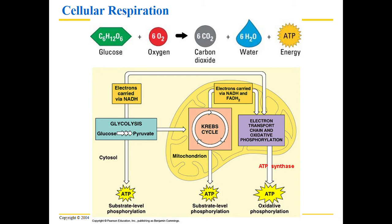The Krebs cycle is also called the citric acid cycle — same thing, just two different names. This is step two of the process. Here we take those three-carbon pyruvates and break them down until we get six carbon dioxides, where each carbon becomes a CO2 molecule. In the Krebs cycle we make some ATP, but mostly we generate electrons carrying hydrogen ions that move on to the next step.